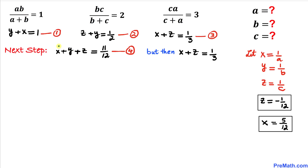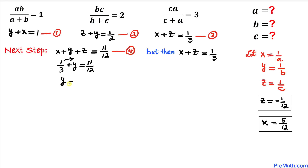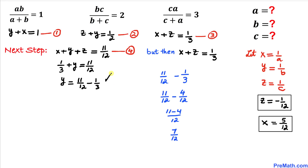Finally, we know that X plus Z equals 1 over 3 from Equation 3. So Equation 4 becomes 1 over 3 plus Y equals 11 over 12. Moving 1 over 3 to the other side, Y equals 11 over 12 minus 1 over 3, which simplifies to 7 over 12. So Y equals 7 divided by 12.